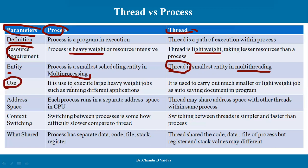If we look at the use, the process is used to execute large heavyweight jobs, such as running different applications. We have a big task to run the process. Whereas the thread is used to carry out smaller, lightweight tasks, like auto-saving documents in a program. For example, within an application tasks like loading content, saving, checking grammar, and auto-saving are carried out by threads.